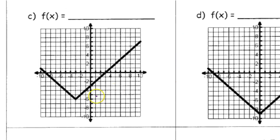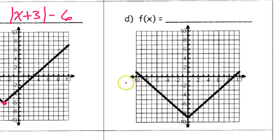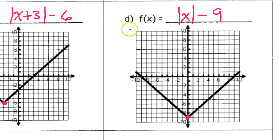For the next one, the vertex is left 3 and down 6. Left 3 would be x plus 3, and down 6 would be minus 6. Looking at the right-hand side, the slope is still up 1 right 1, so I don't need anything in front. How about this one? The vertex is on the y-axis — no left or right — so that's just the absolute value of x. But it is down 9, so I need a minus 9 on the end. Slope is up 1 right 1, so nothing in front. That's the answer.